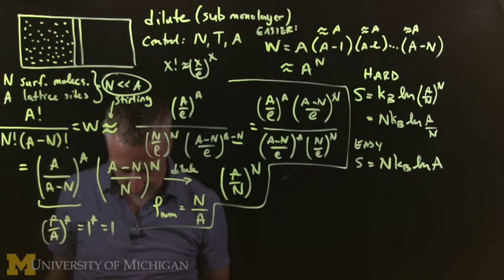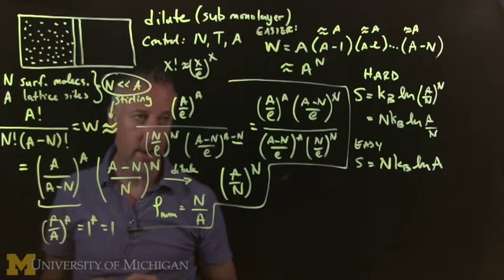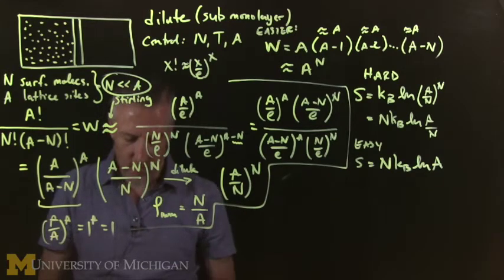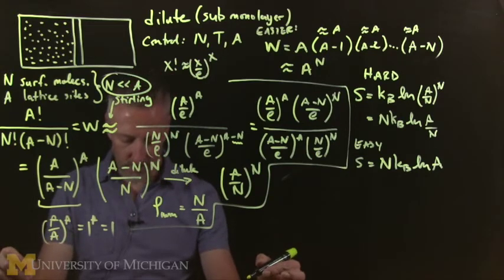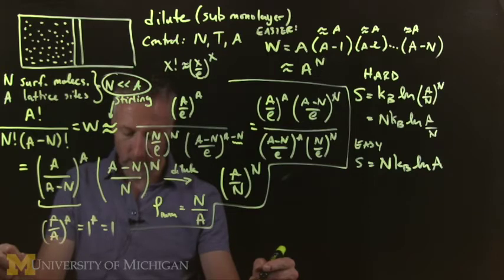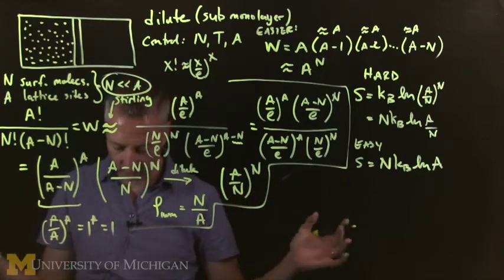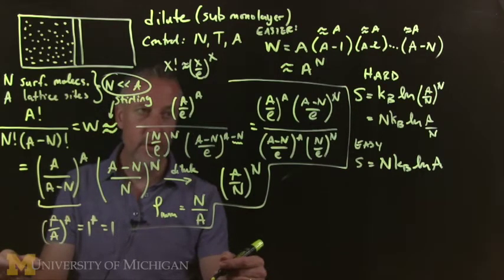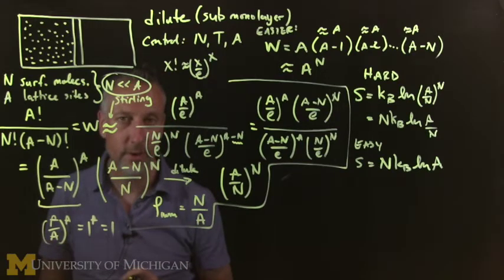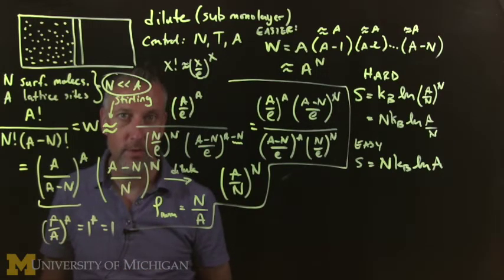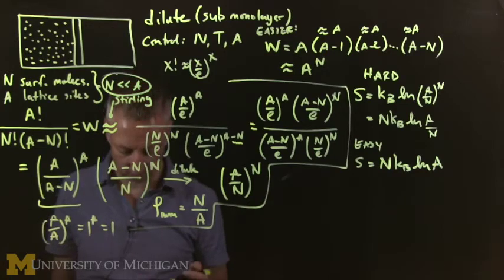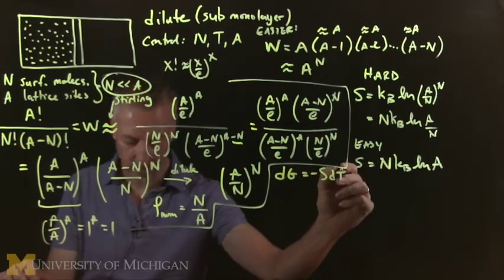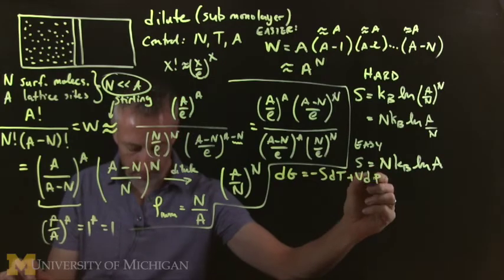Now we're going to use the Gibbs energy to find the pressure. We start with our typical recipe. The variables are: number of particles N, external pressure is constant, temperature is constant. We add a new work term. So we have dG = −S·dT + V·dP...